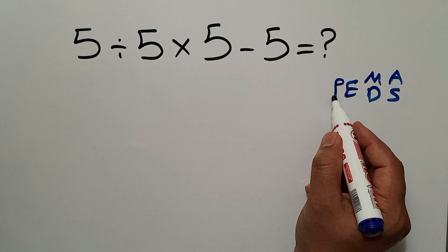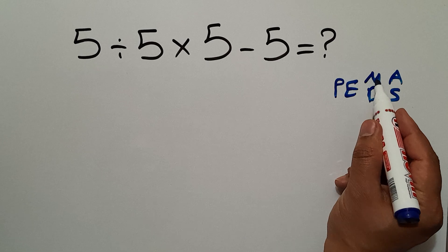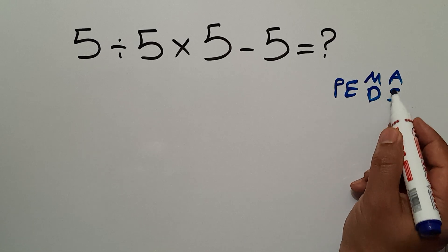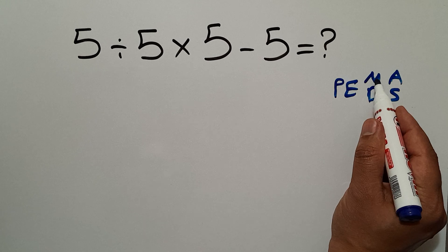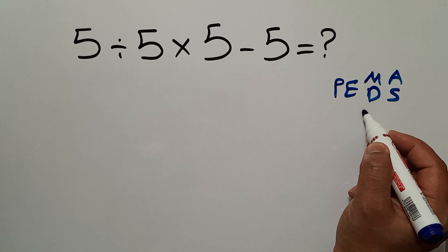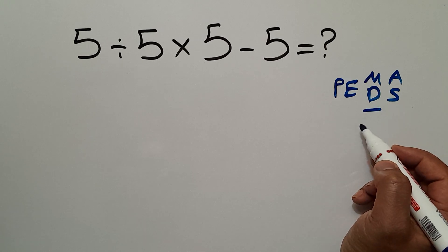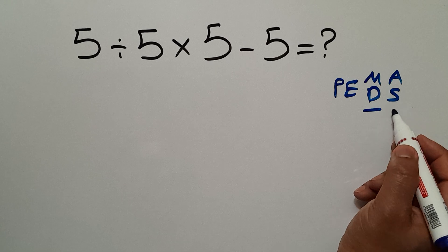We first do parentheses, then exponents, then multiplication or division, and finally addition or subtraction. Remember that multiplication and division have equal priority, and we have to work from left to right. And the same applies to addition and subtraction.